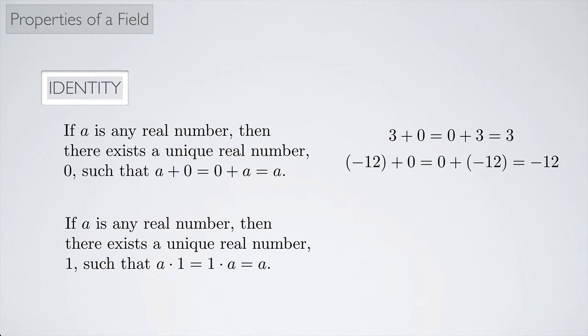For multiplication, it's a little bit different. If A is any real number, then there exists a unique real number, which we're going to call 1, such that A times 1 is 1 times A, and that gives you back A. So it works the same way in the sense that it gives you back the same thing. But now instead of a 0, we're going to use 1. So for example, 2 times 1, that's 1 times 2, and that gives you back 2.